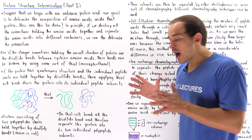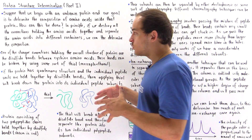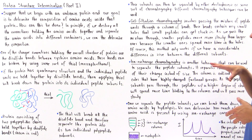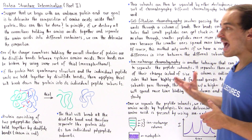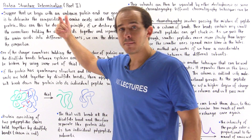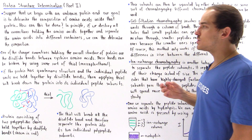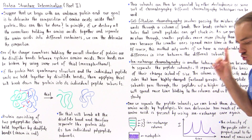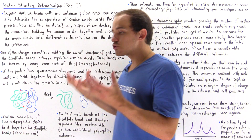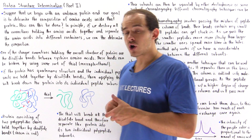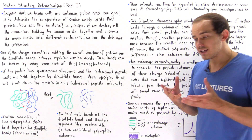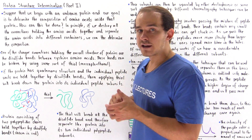How exactly can we find this experimentally? One of the stronger bonds that hold the tertiary structure of our protein, as well as the quaternary structure, is our disulfide bridges.